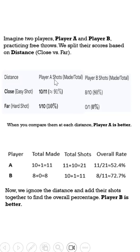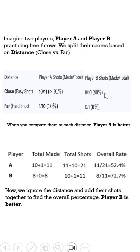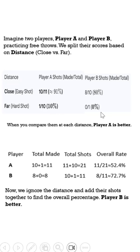Player A made 10 out of 11 at close distance, that is 91 percent. Player B got 8 out of 10, that is 80 percent. At far distance, Player A got 1 out of 10, which is 10 percent. Player B got 0 out of 1, that is 0 percent. So distance-wise, Player A is doing better in both categories.